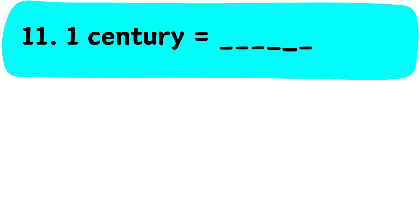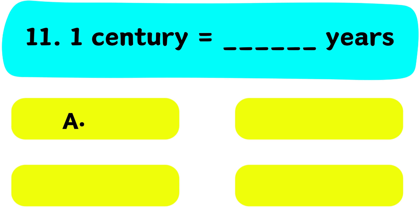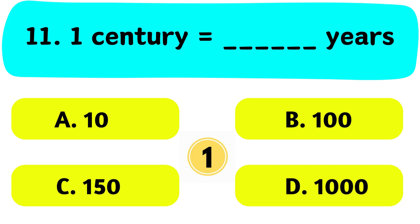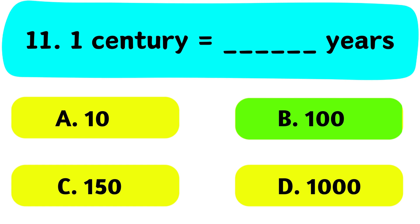Question No. 11. One century is equal to how many years? A. 10, B. 100, C. 150, D. 1000. The correct answer is Option B. 100 years.